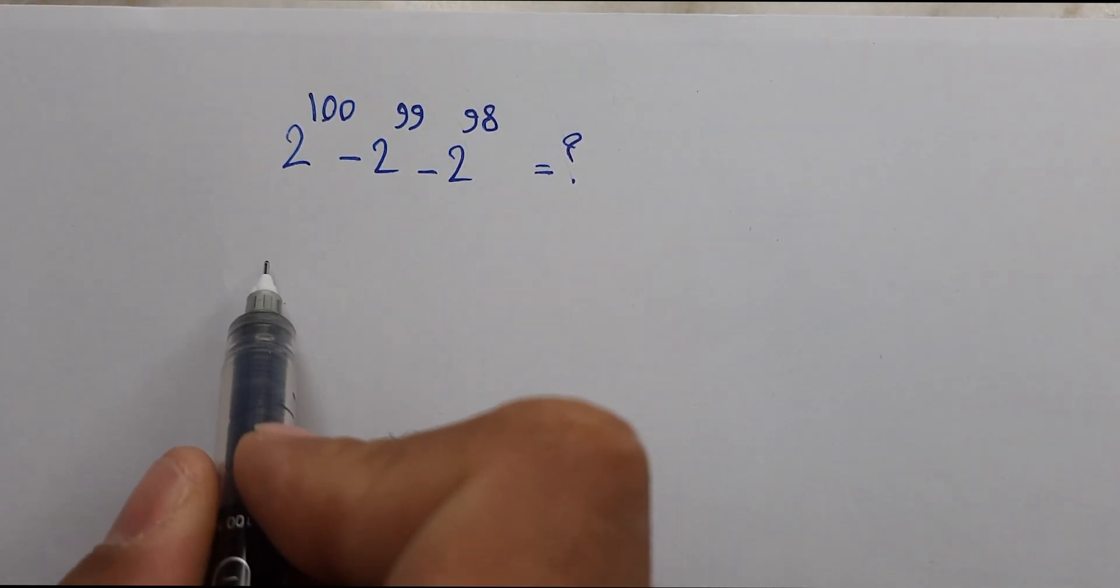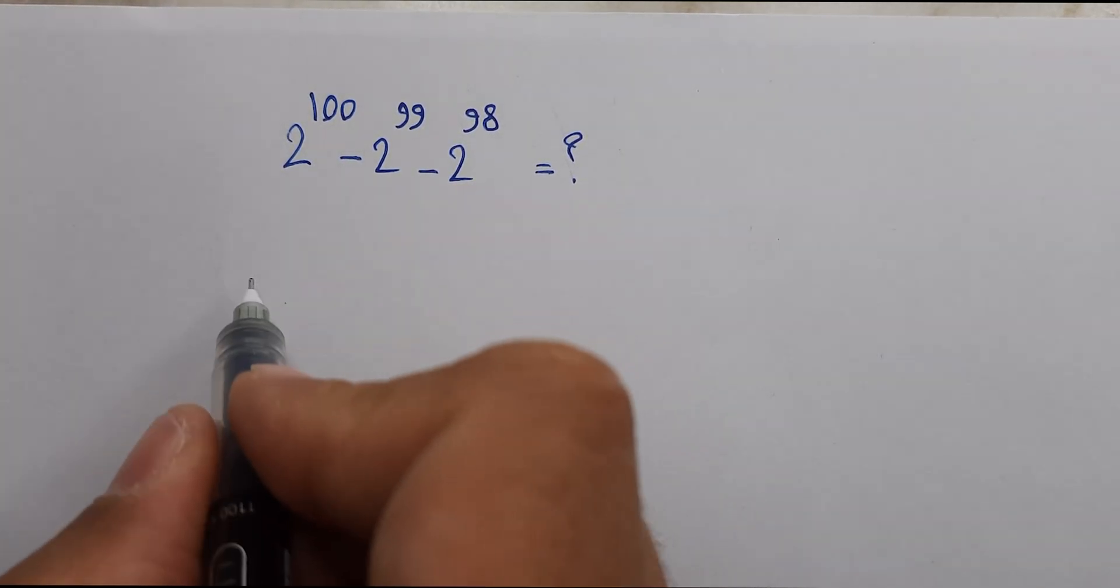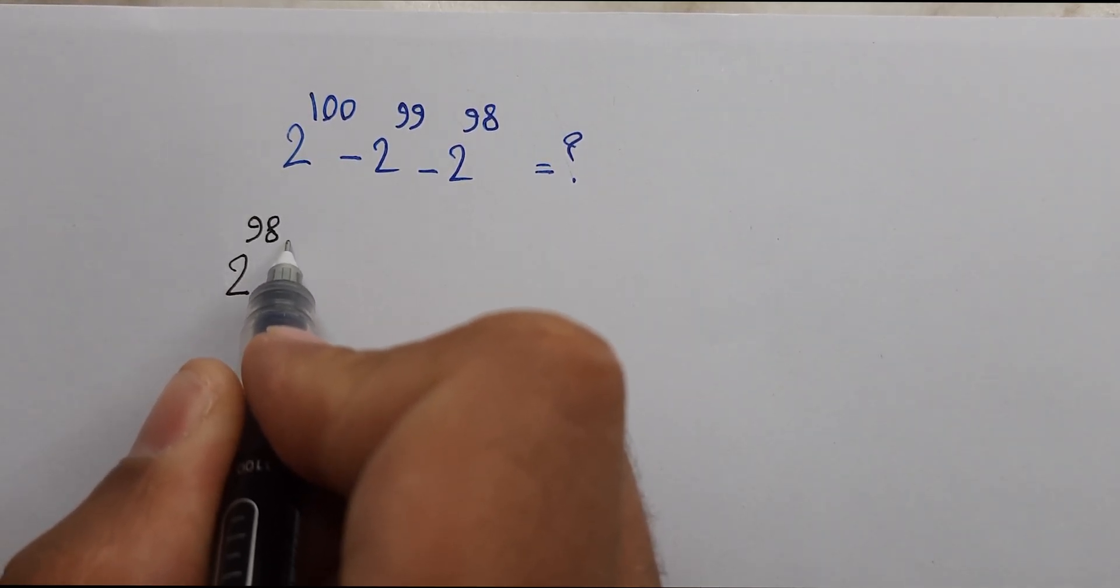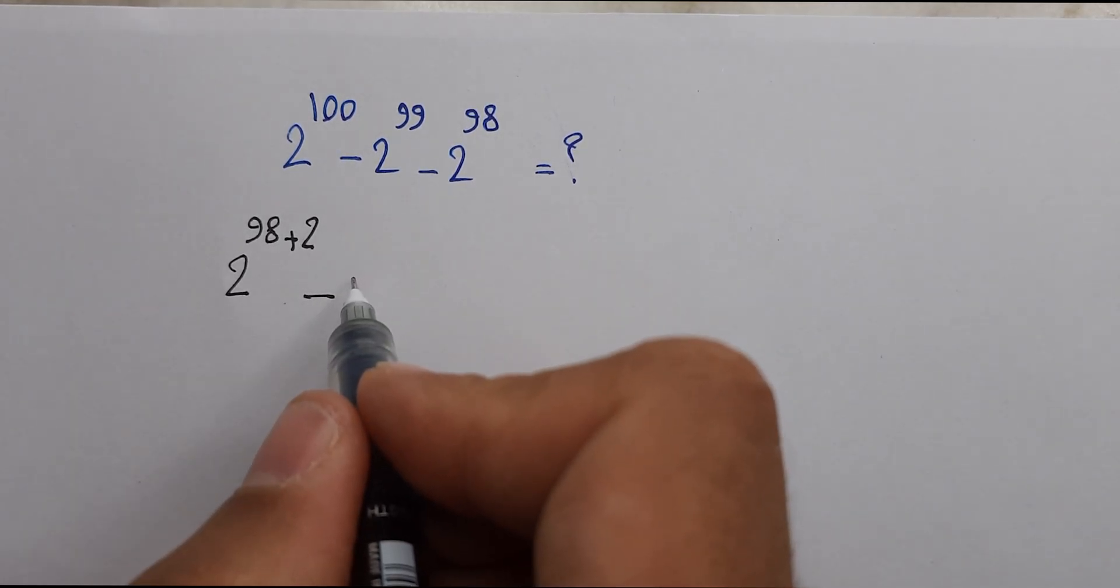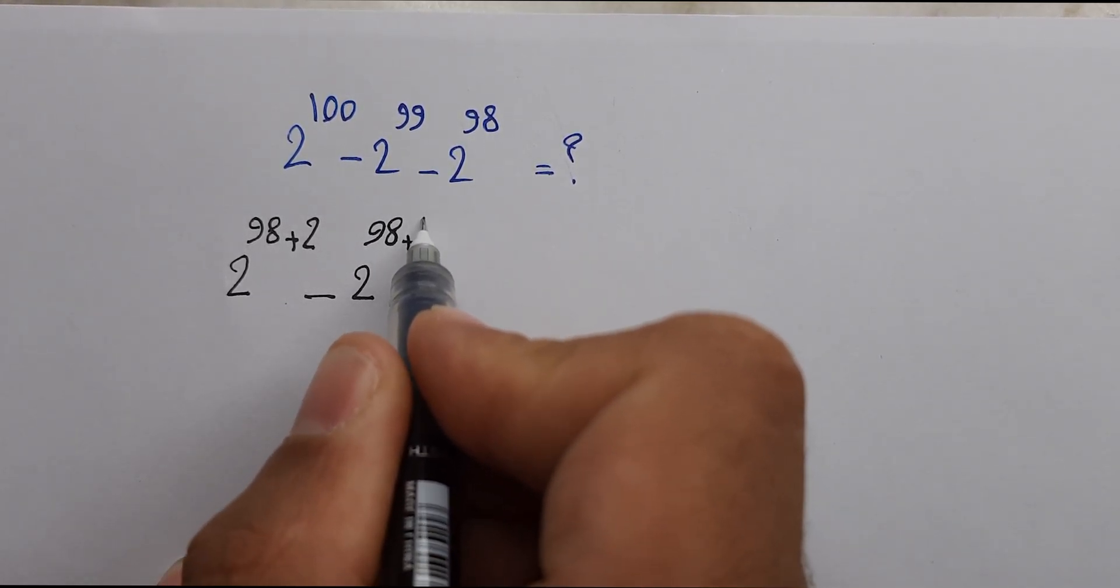Now we can write 2 power 100 as 2 power 98 plus 2, minus we can write 2 power 99 as 2 power 98 plus 1.